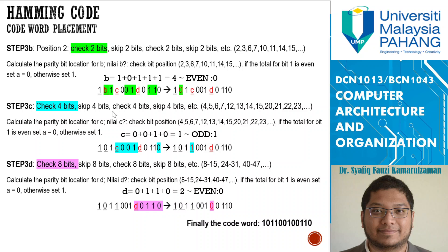For parity bit c (position 4), check 4 bits and skip 4 bits. The total — 0, 0, 1, 0 — is 1, which is odd, so c is 1. For parity bit d (position 8), check 8 bits and skip 8; since data finishes at 5 bits, check only those 5. The total — 0, 1, 1, 0 — is 2, which is even, so d is 0. The final coded word is the data combined with parity bits A, B, C, D inserted at their respective positions.